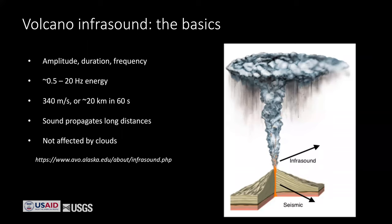Some basics about infrasound: it's a low-frequency wave that propagates in the atmosphere, similar to seismic. We look at simple things like the amplitude, duration, and frequency of the signal when we're monitoring infrasound. Usually the energy is between about 0.5 and 20 hertz. 20 hertz is the upper limit — that's the cutoff between infrasound that humans can't hear and sound that we can hear.